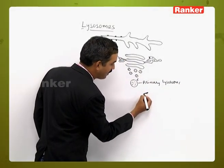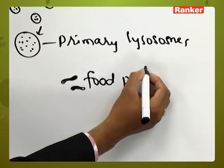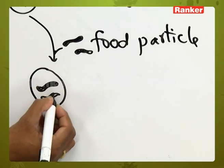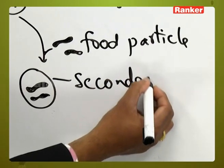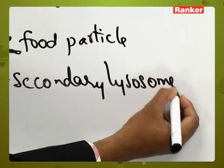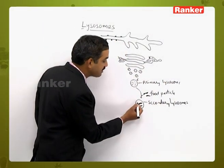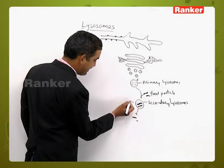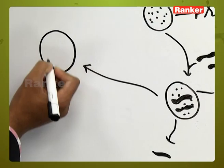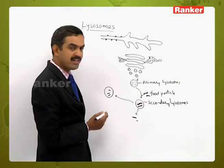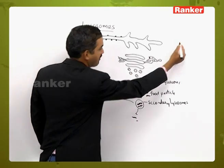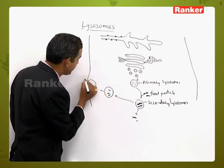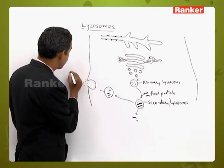In the diagram, if a food particle or foreign particle enters a primary lysosome, it is converted into a secondary lysosome containing the food particle. Inside the secondary lysosome, digestion begins — the hydrolytic enzymes act on the food particle and the digested materials are released outside. The undigested structure, acting as a tertiary lysosome, moves toward the plasma membrane where it dumps all undigested materials outside the cell by exocytosis.